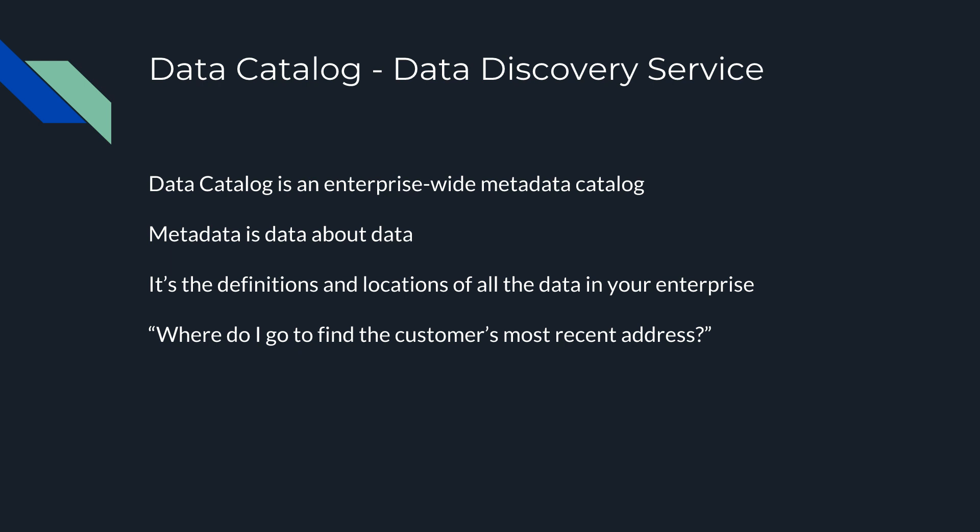If you are a business user and you want to know what kind of data do we have on this person, or what kind of data do we store about an order, or where the historical data is stored — if you have needs for data, you need to know where it is. Your data catalog should tell you exactly what you have and where it's stored.